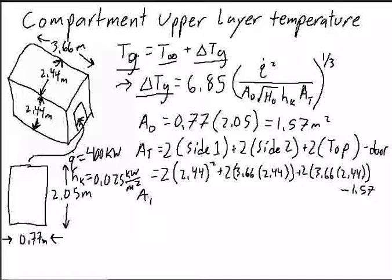And so AT is going to equal 46.05 meters squared. So we can take the information that we're given and plug that into the equation we got from the SFPE handbook. So Tg is going to equal our ambient temperature, which we're going to assume is 298 Kelvin.